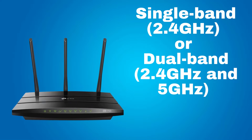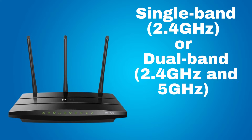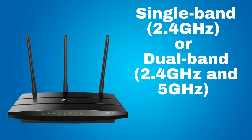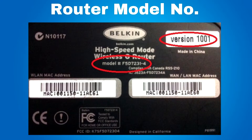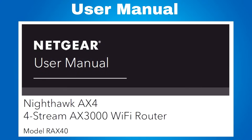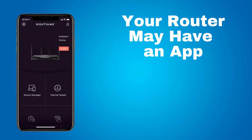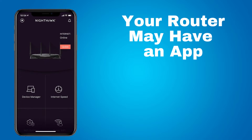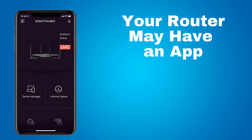First, check to see if your router is single band — supports only 2.4 GHz — or dual band — supports both 2.4 and 5 GHz. To check this, look under your router for the router model number and check online for information about your router. Or if you still have the router's owner's manual, check the manual. Or, newer routers have an app you can download; use your router app to connect to the router settings. On the app, you may be able to see if you have dual bands and change one of those bands to 2.4 GHz.